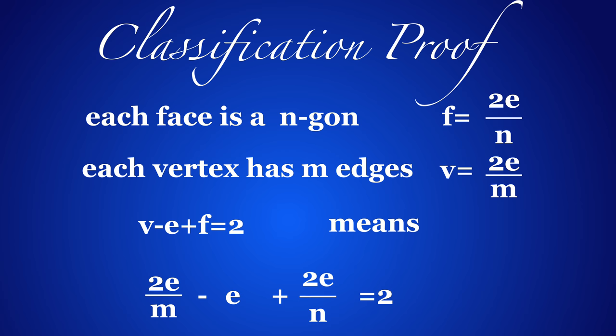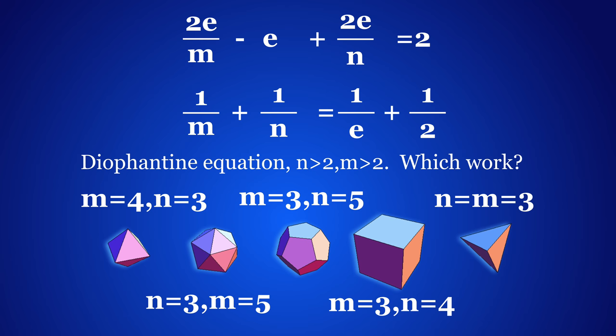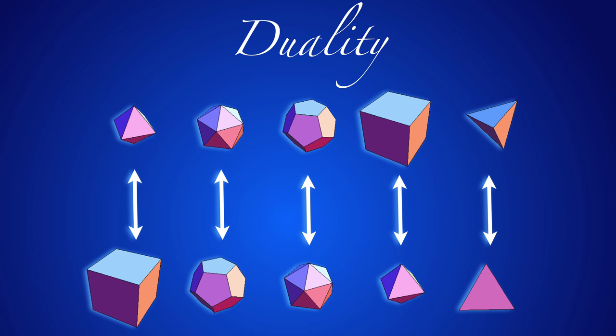Let's look at that formula again. It can be simplified by dividing by e and putting the 1 over e on the other side. Now we have a nice equation where both sides are sums of positive fractions. Note that n and m are both bigger than 2. There are only finitely many solutions to this Diophantine equation — just try out what works and what doesn't work — and you get the classification of the five platonic solids.